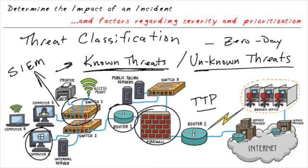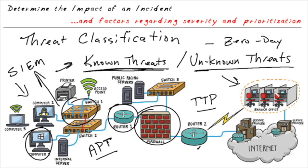If we have ransomware encrypting data on our systems and holding it for ransom, it will look very much the same on all systems it affects. Or if we have an advanced persistent threat over a long period of time leaking or stealing data, once we identify some malicious activity and better understand its tactics, techniques, and procedures, we can continue to look for it across our systems.